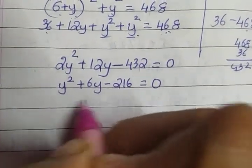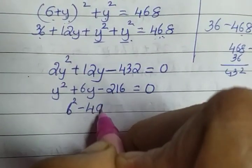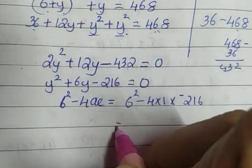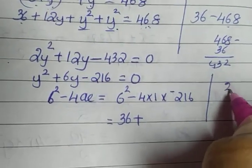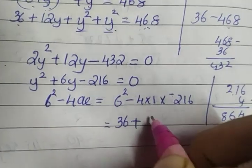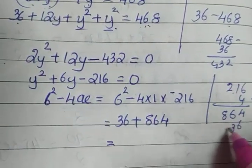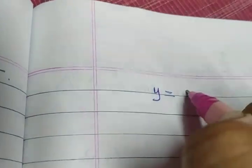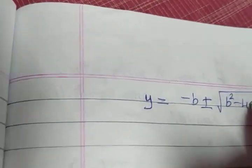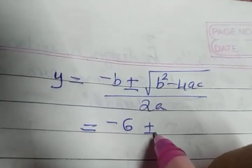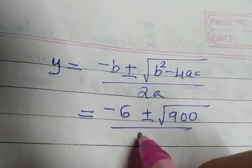We solve this quadratic equation using the quadratic formula. First, we find the discriminant b squared minus 4ac: 6 squared minus 4 into 1 into minus 216, which equals 36 plus 864, giving us 900. Applying the formula y equals minus b plus or minus square root of (b squared minus 4ac) divided by 2a, we get y equals minus 6 plus or minus square root of 900 divided by 2.